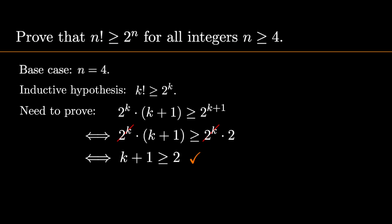So from this, it follows that the original equivalent inequality is also true. 2 to the k times k plus 1 is greater than or equal to 2 to the power of k plus 1.